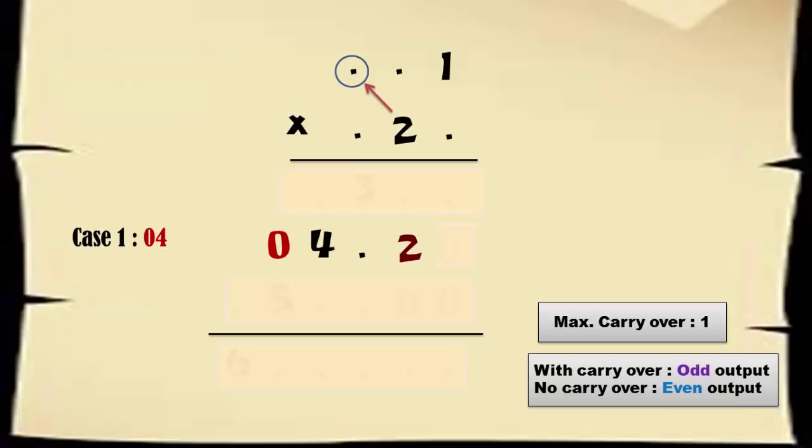Let's first consider the case of 04. The output of 2 multiplied by third digit is giving an even number. That means there was no carryover on the third digit. And the only possible value of this digit is 2.